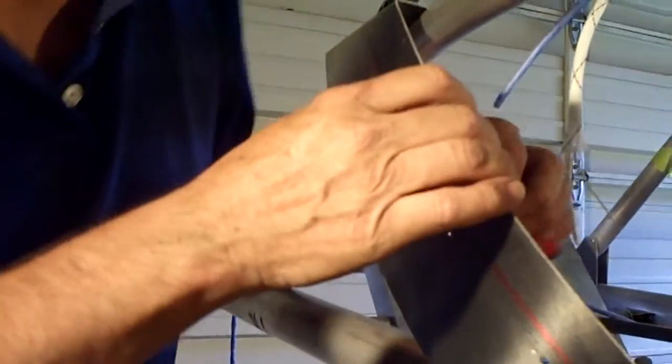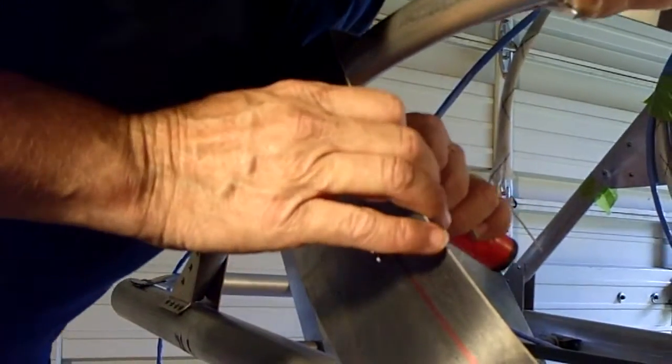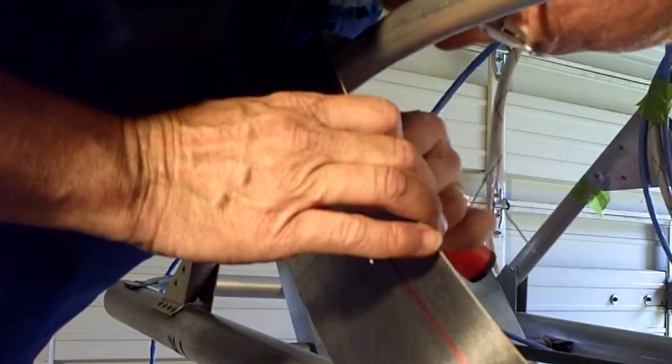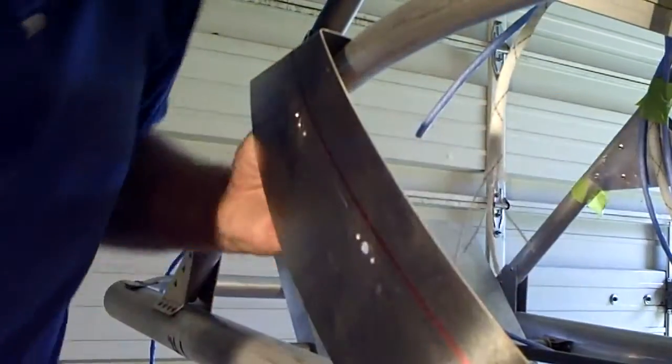Then you go in behind here and do the same thing from behind. You want to make sure to get all those little burrs off of there and the reason for that is burrs under a rivet in aircraft aluminum, as this flexes in flight, can create a stress point and cause a crack to form.